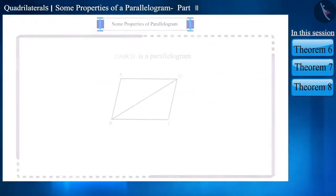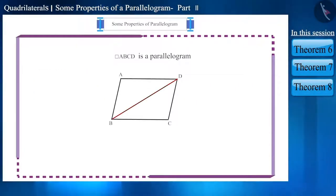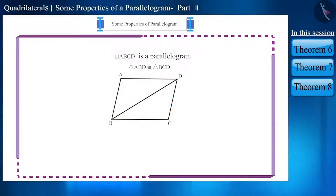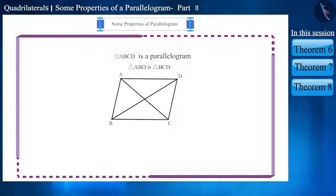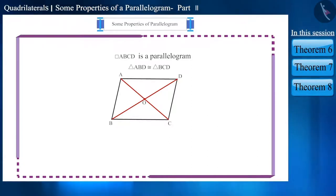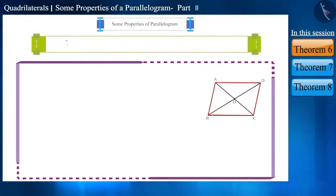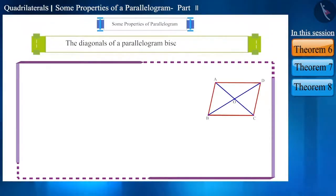Friends, we know that the diagonal of a parallelogram divides it into two congruent triangles. If we construct both the diagonals of a parallelogram such that they intersect each other at O, the diagonals of a parallelogram bisect each other.